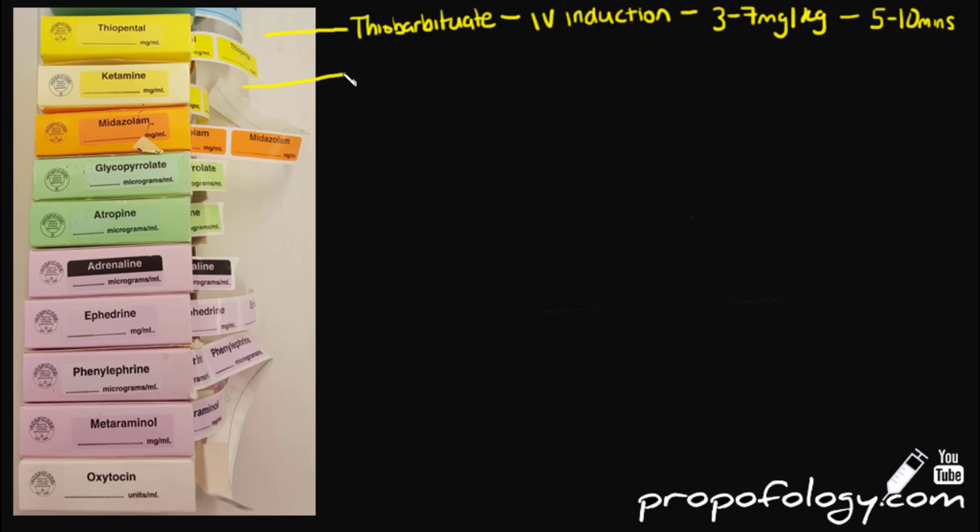The next drug down is ketamine. Ketamine is used as an IV induction agent as well. It's also used as an analgesic. It's what's known as a phencyclidine derivative and it was originally developed in the late 1970s for the Vietnam War. It is given as 1-2mg per kilogram for IV induction of anesthesia or as an analgesic dose of 0.2-0.5mg per kilogram.